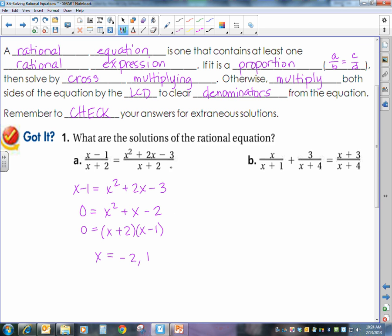Now what kind of restrictions did I have? x could not be equal to negative 2 because that makes my denominator 0. So that eliminates that solution. So all I have is x equal to 1.